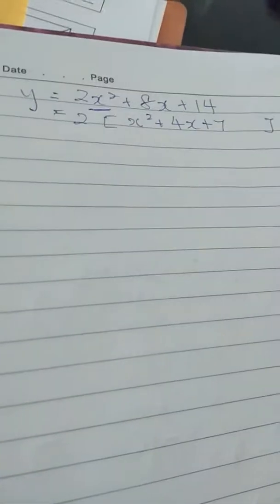You need to make the coefficient of x² equal to 1. So you have to factorize the 2 out. When you factorize the 2 out, you're left with x² + 4x + 7.